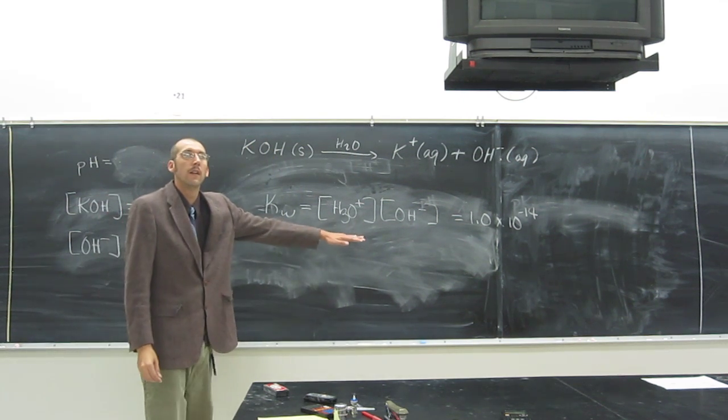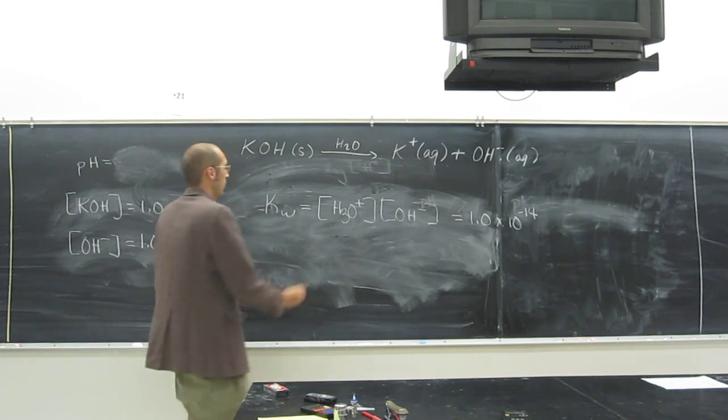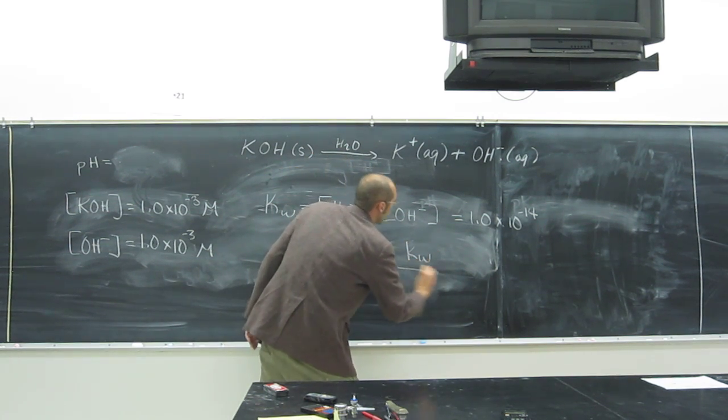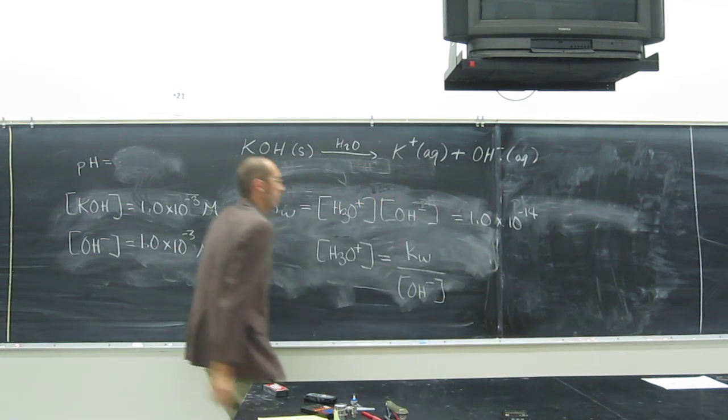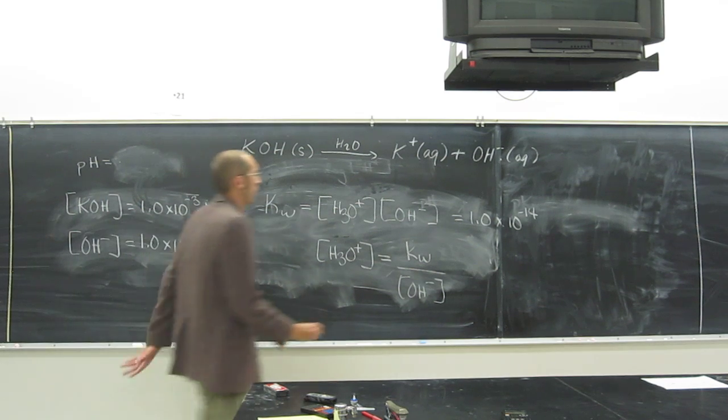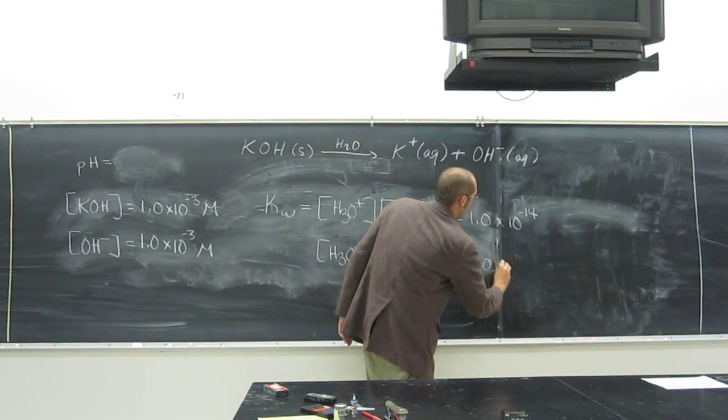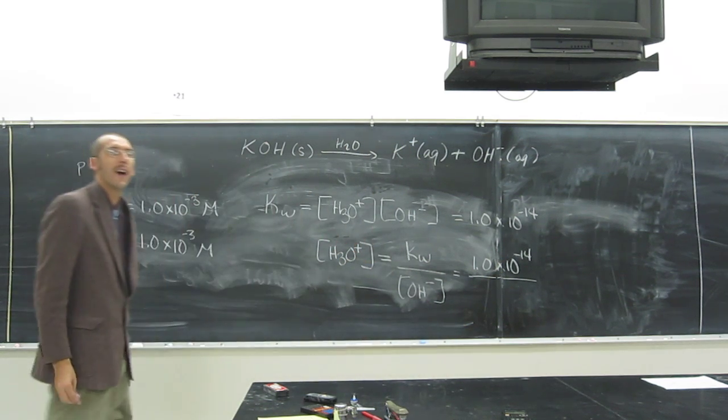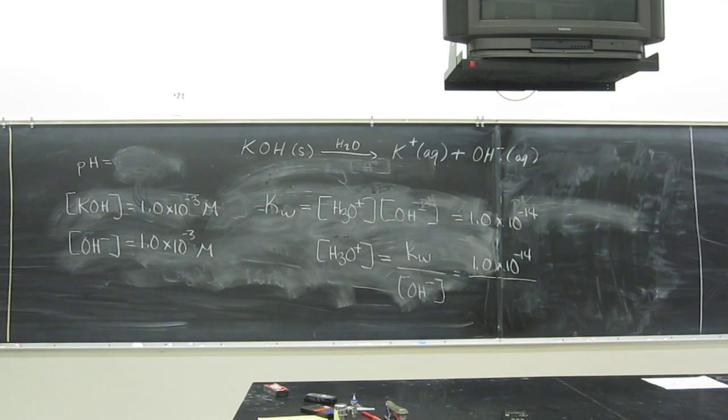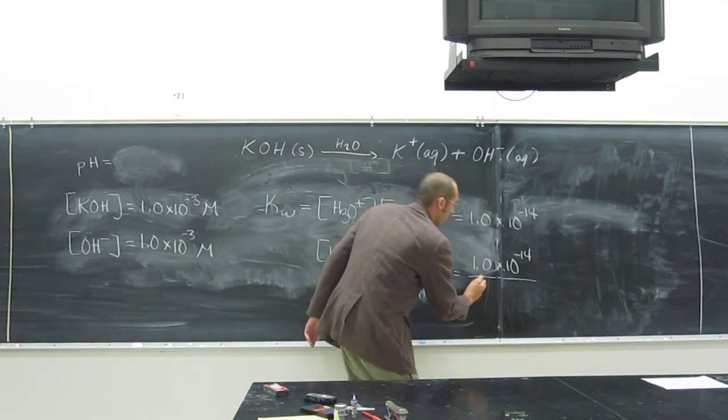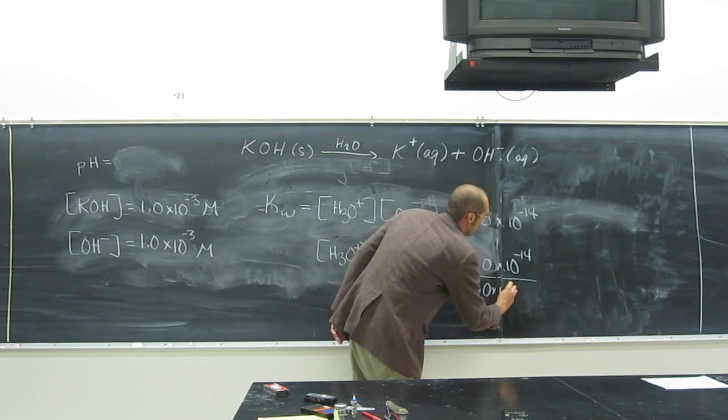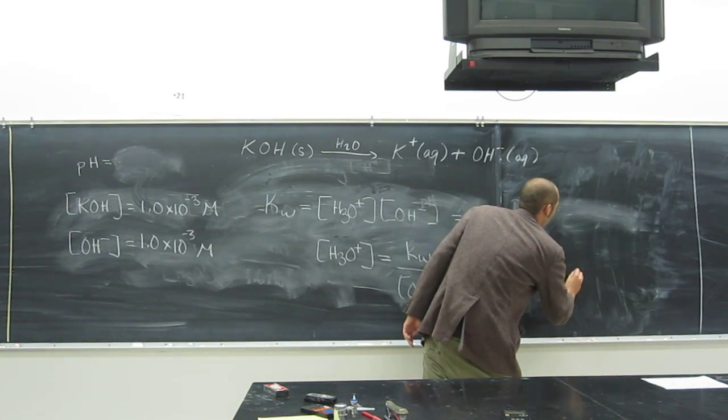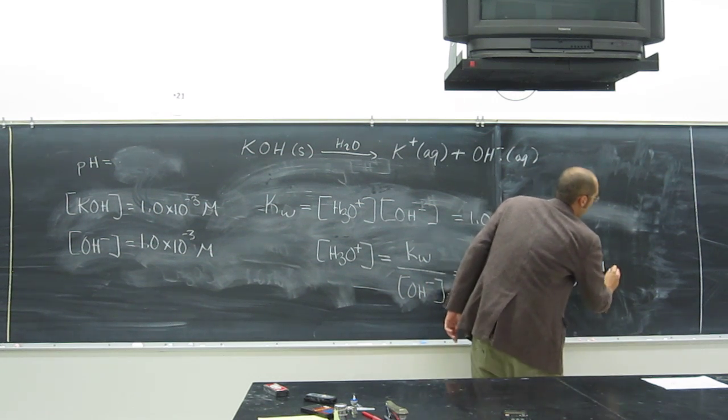So, do you think we can figure out the H3O plus concentration? Yeah, so H3O plus concentration equals Kw divided by OH minus concentration. We got the OH minus concentration, we got the Kw. 1.0 times 10 to the negative 14, notice these units don't ever work. So, you got to just remember your units when we're doing any of these K equilibriums. So, here, 1.0 times 10 to the negative 3, so what is it? Yeah. 1.0 times 10 to the negative 11 molar, right?